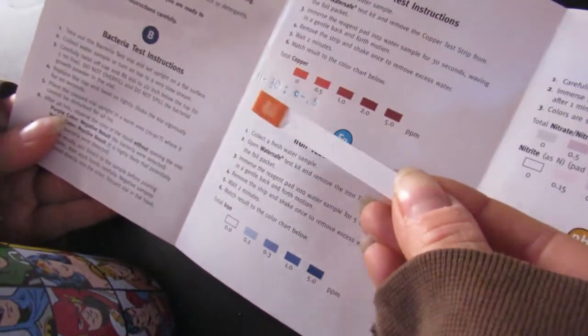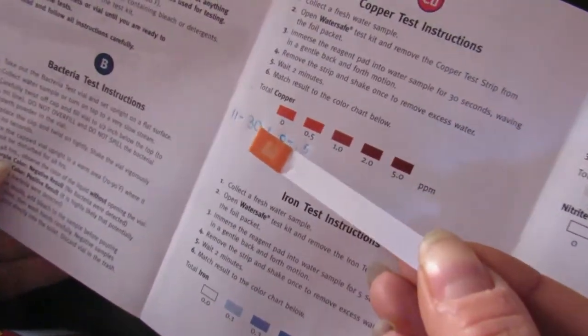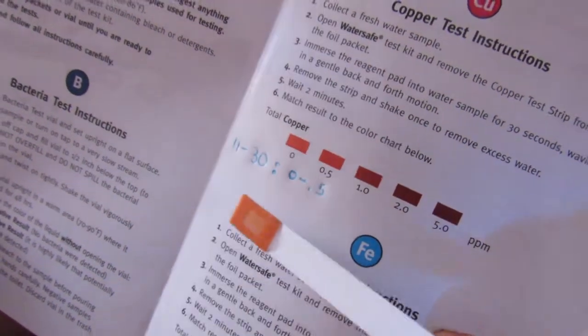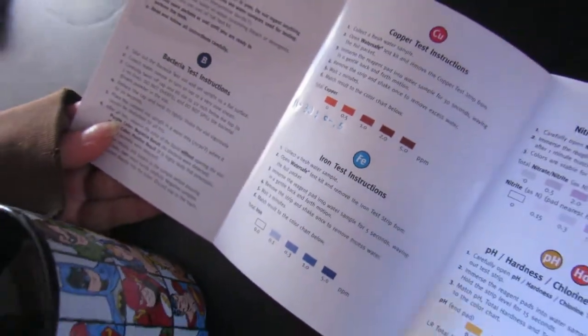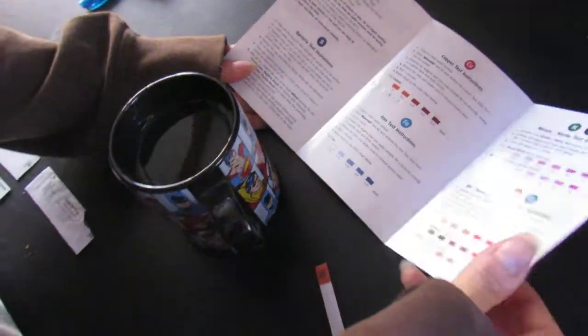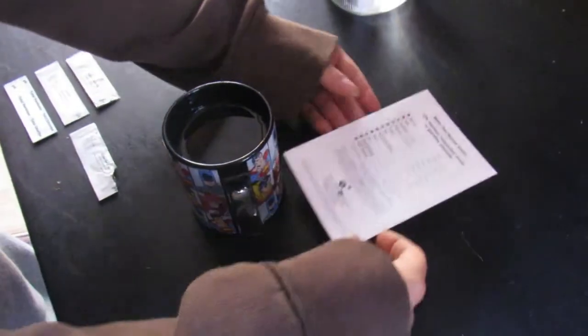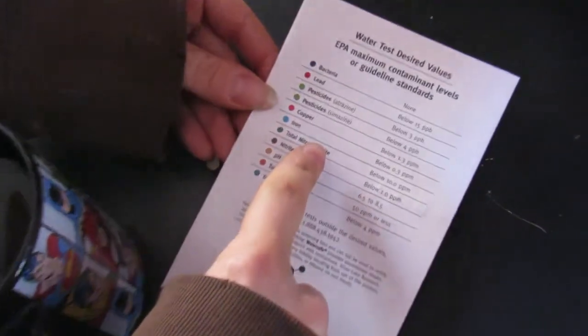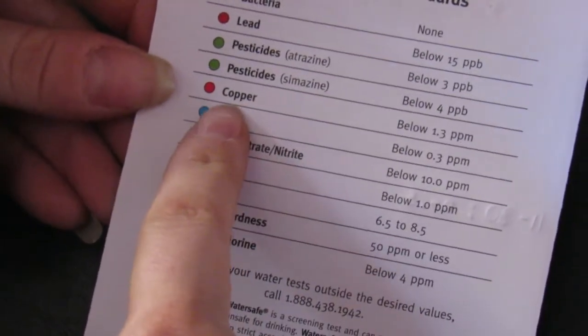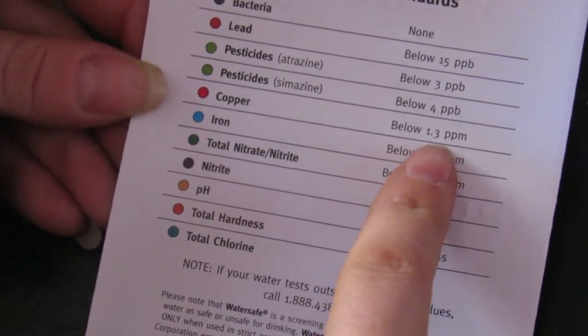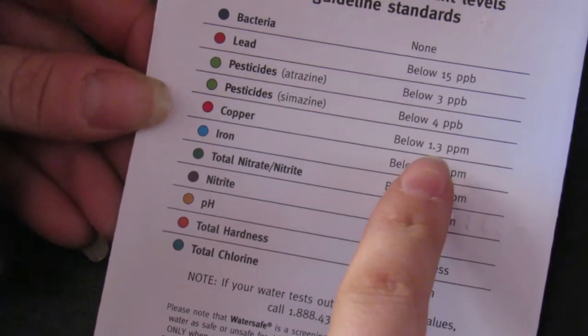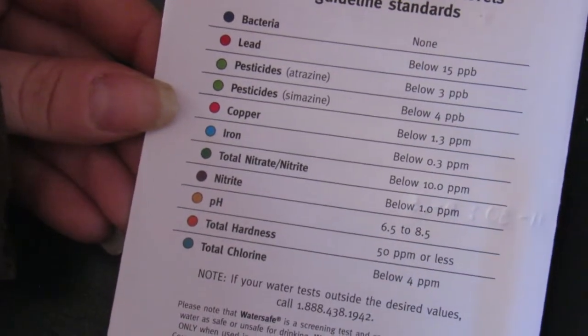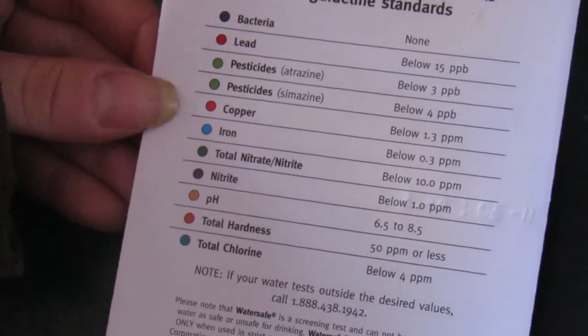Then you check it with the colors that they gave you. I already did this one. This one came out on the low end of the copper, which is between 0 and 0.5. I kept track of it so we can come back and do a test later. It tells you what the EPA maximum contaminant levels are. For copper, below 1.3 parts per million, so we're only 0 to 0.5. So we're fine on the copper range. We got one test done.